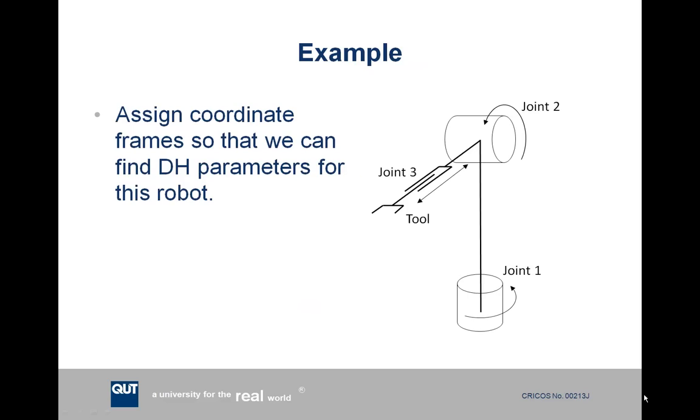We'll do an example of assigning the appropriate reference frames and then finding the DH parameters for the robot shown here. This is a three joint robot. The first two joints are revolute joints, joint three is a prismatic joint, and then you've got your tool point at the end of the robot arm.